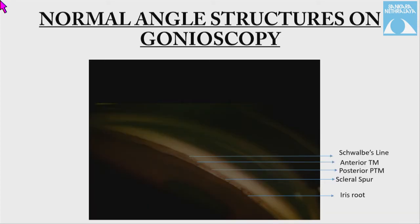Before going into the details of primary angle closure disease, we'll go through the normal angle structure that we see on gonioscopy. From posterior to anterior, we see the iris root — if we see the iris root, then the angle is open — then scleral spur, then the pigmented posterior trabecular meshwork, anterior non-pigmented trabecular meshwork, and Schwalbe's line.